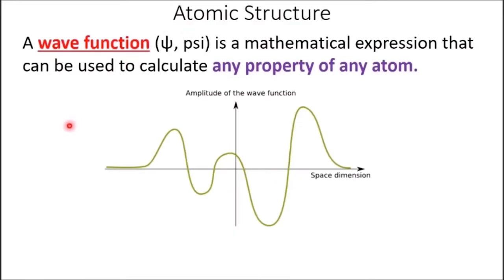A wave function is represented by psi — the Greek letter psi — and it is a mathematical expression that can be used to calculate any property of any atom. Wave functions for each atom have some exact properties. Each wave function describes an electron in a quantum state with its specific energy, and other properties are described by the quantum numbers: n, l, ml, and ms. Quantum mechanics is all about distinct integer values — like 1, 2, 3, 4 — it can't be 1.1 or 1.2; it has to be whole numbers.